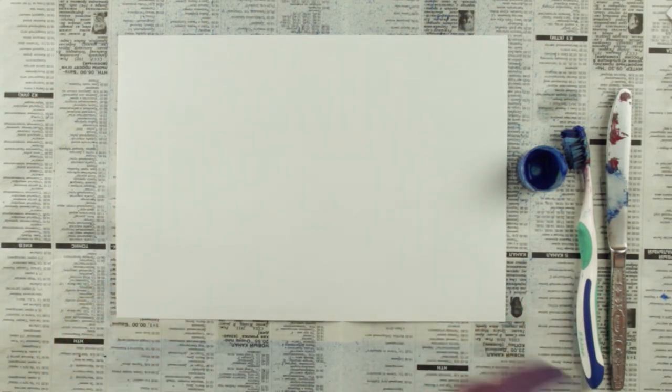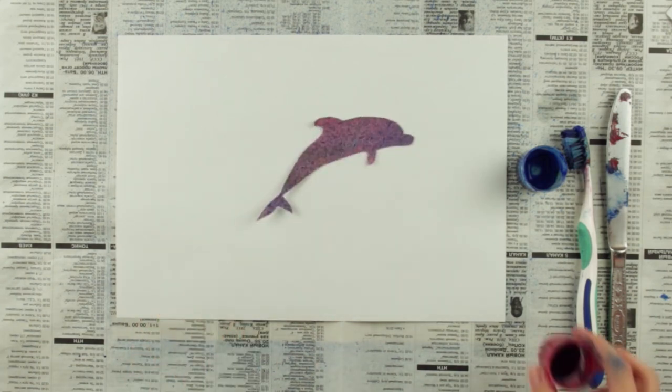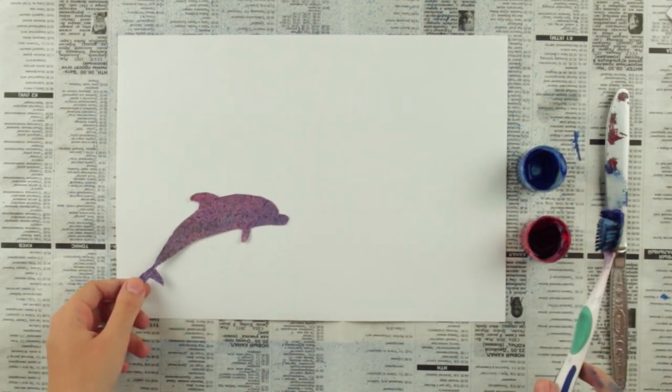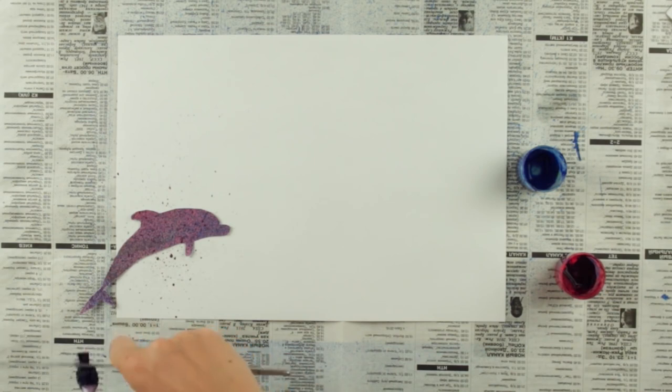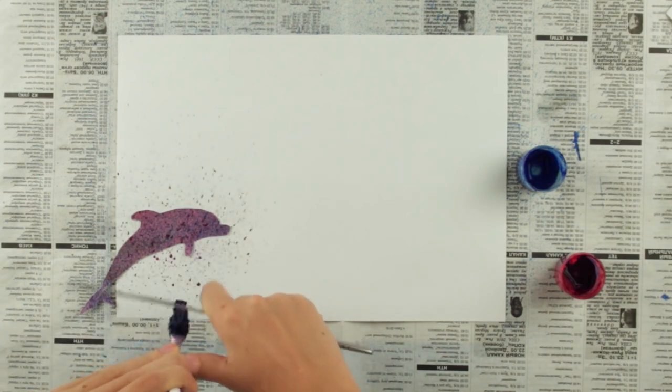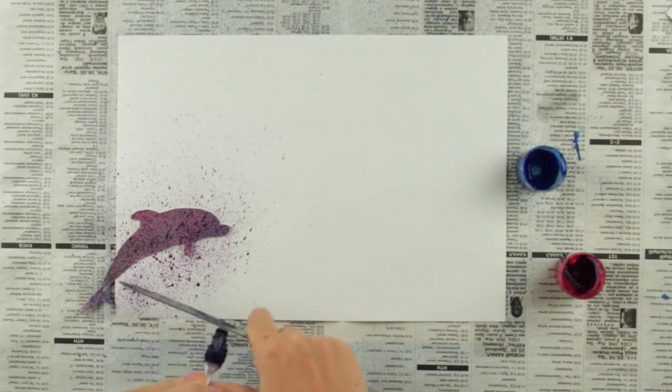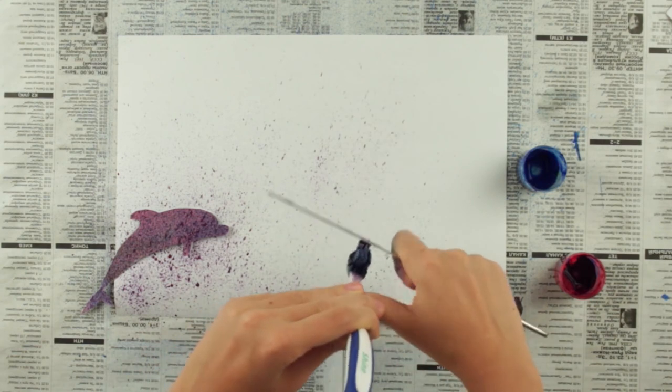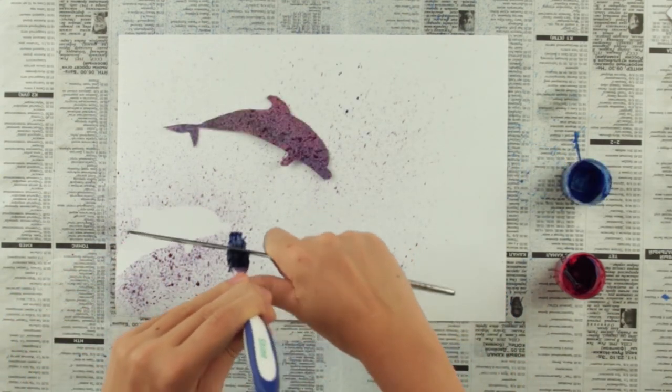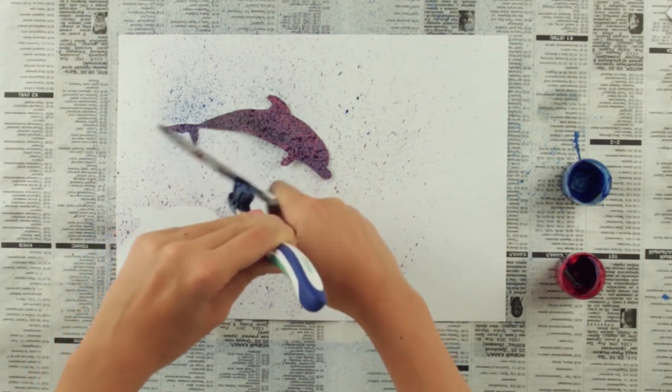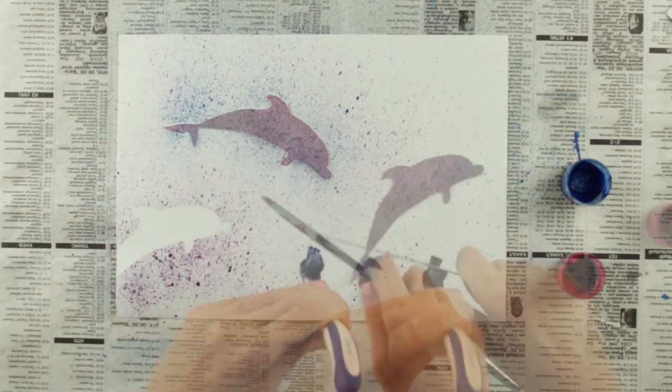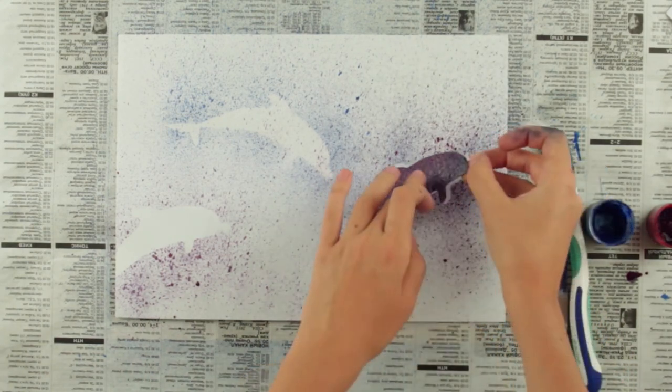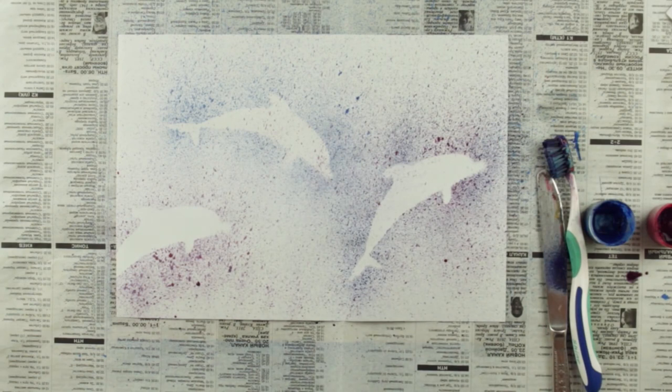For that, we'll need a template of a dolphin. You may either hand draw it or print out the image from the internet. A cardboard one is easier to work with and can be used multiple times. Let's add another color. We've chosen red for a brighter look. You may use several colors at a time. The steps are the same. You may use one or a number of images. Just work out the arrangement of the templates in advance.